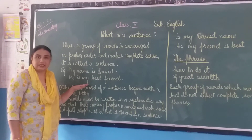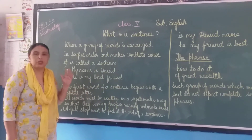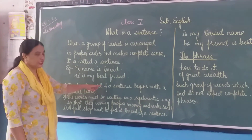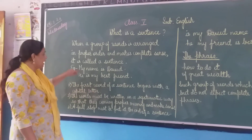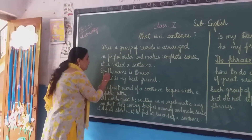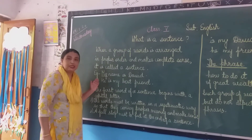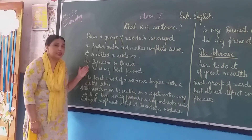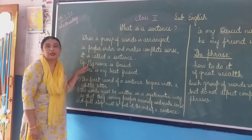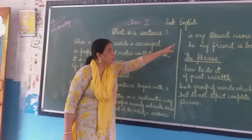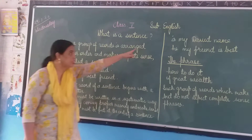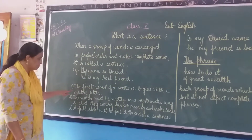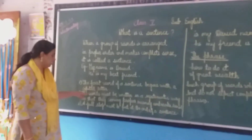Now when we are making sentences we have to follow certain rules and keep a few things in mind. First point: the first word of a sentence begins with a capital letter. As we are seeing here, the first word starts with a capital letter. If you are taking a certain name — for example, 'Mahatma Gandhi is called the father of the nation' — you cannot write M as small. You have to always use a capital letter for the first word when writing a sentence.